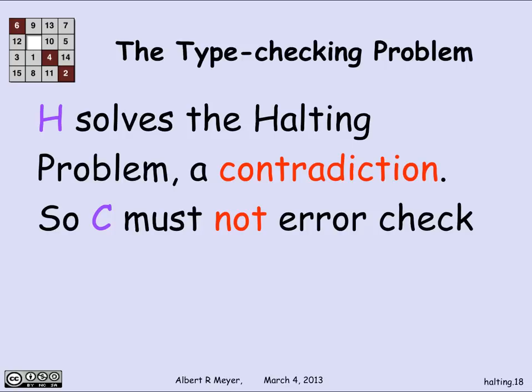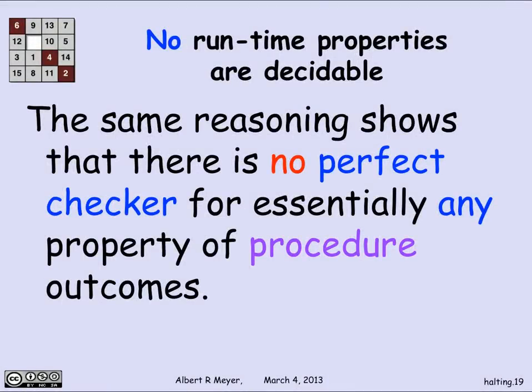That is an example of how you reason from the contrived, self-referential halting problem — whether a string procedure applied to its own definition halts or not — and apply it to all sorts of questions and properties of procedures we really care about. The same reasoning shows it's not just type checking; there's more or less no perfect checker for any kind of property that procedure outcomes might exhibit. This is why theoretical computer scientists have great respect and interest in diagonal arguments — they crystallize a whole set of absolutely logical, intrinsic limitations on the power of computation.